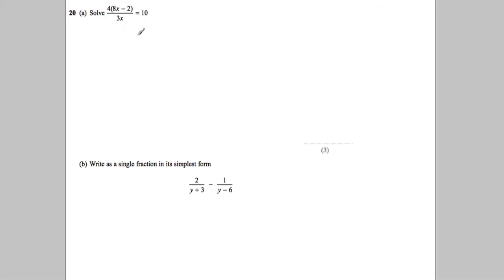Problem 28: We're asked to solve this. The first thing I notice is I have a 3x on the denominator on the left-hand side. I don't want X's on the denominator, so I'm going to multiply both sides of the equation by 3x.